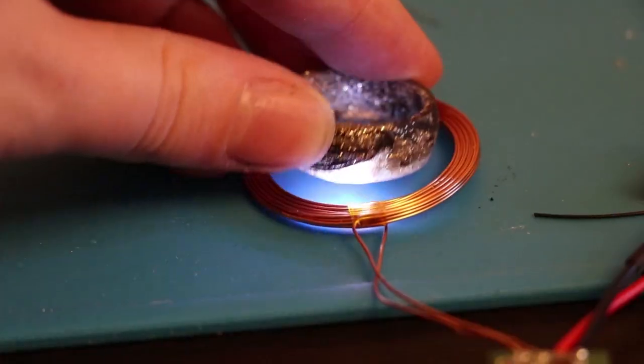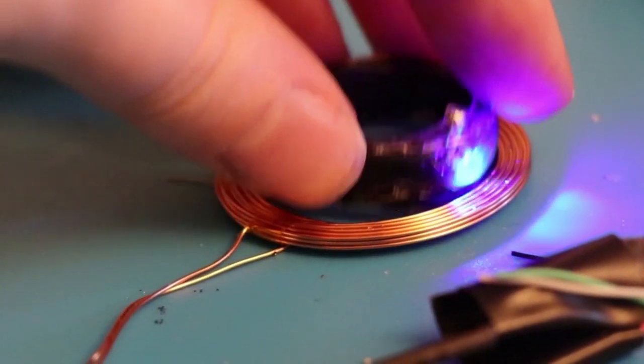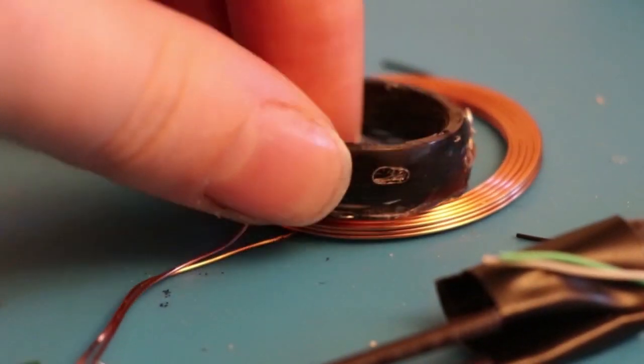I also made a version with glitter in the resin, and one with coils facing opposite directions so it lights up different colors on either side.